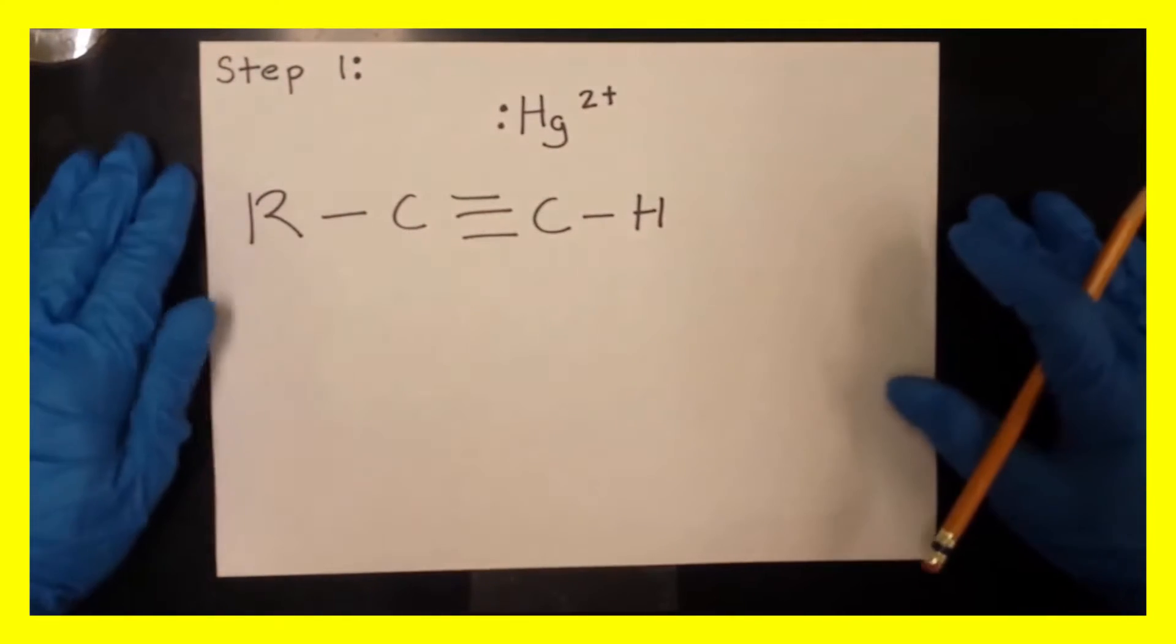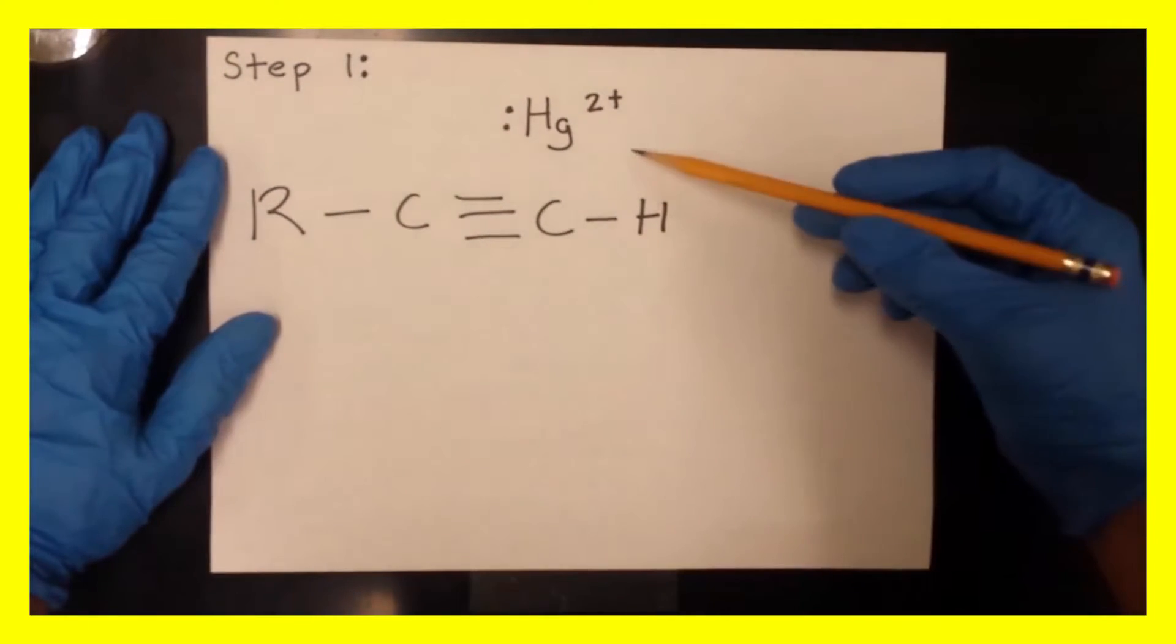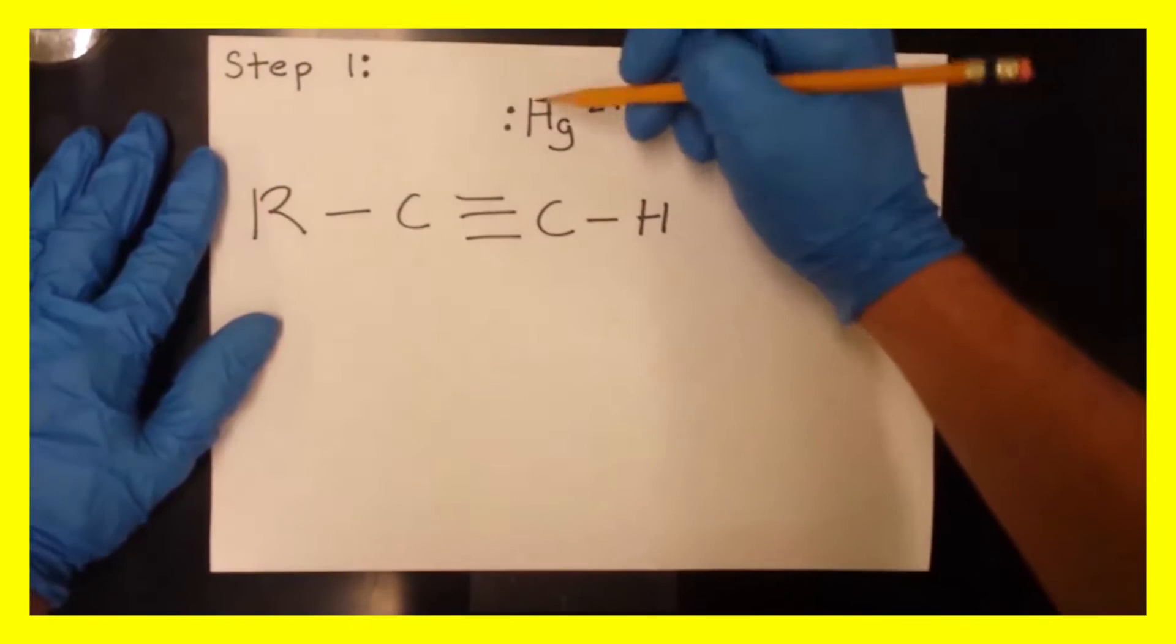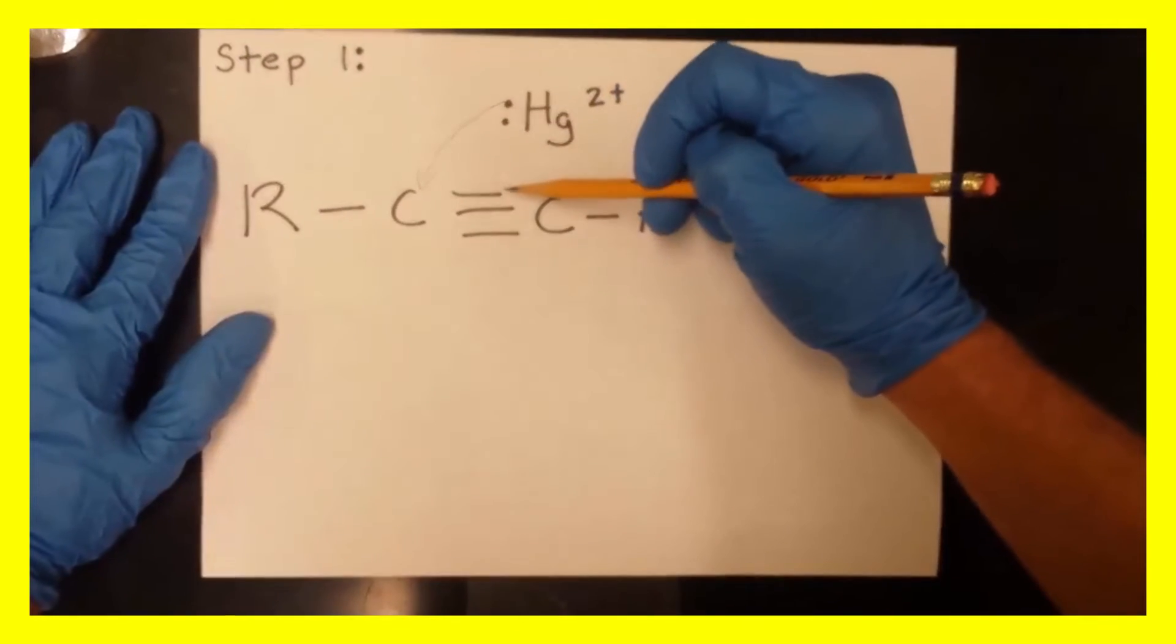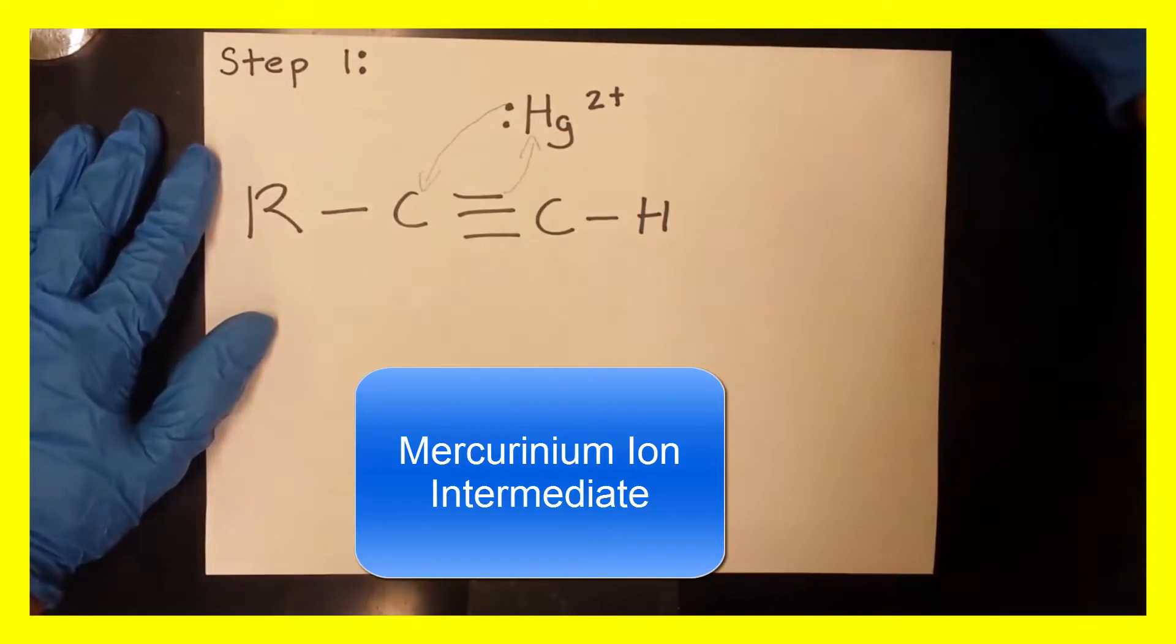So in step one, we'll have our terminal alkyne and the mercury 2+ ion. The lone pairs from the mercury are going to attack this partial positive carbon here, and the pi bonds are going to attack the mercury forming a cyclic mercurium ion.